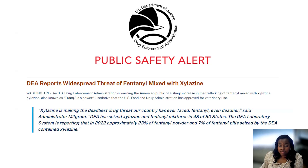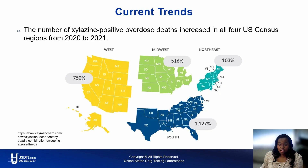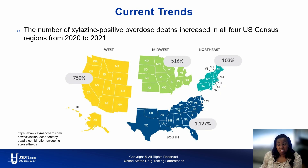The DEA has seized xylazine and fentanyl mixtures in 48 of 50 states. The DEA laboratory system reported that in 2022, approximately 23 percent of fentanyl powder and 7 percent of fentanyl pills seized by the DEA contained xylazine. Other significant trends shown on this map include a nationwide increase of xylazine-positive overdose deaths. In the northeast, there was a 103 percent increase in detection between 2020 and 2021. In the south, there was a 1,127 percent increase. In the midwest, 516 percent. In the west, 750 percent. It's important to mention that xylazine testing was not a standard test, and the results here could unfortunately be even higher.